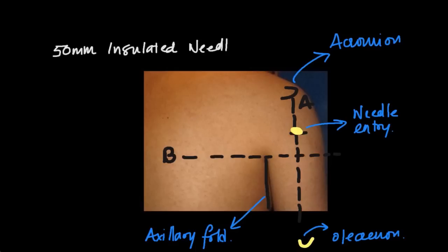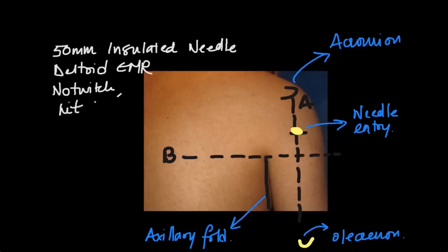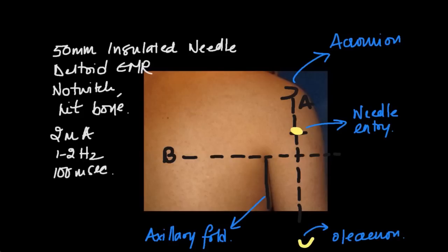You need to use about a 50 millimeter insulated needle, and once you stimulate the axillary nerve you will get a deltoid evoked motor response. If you do not get a twitch, you just hit the bone, withdraw the needle, and inject your local anesthetic.